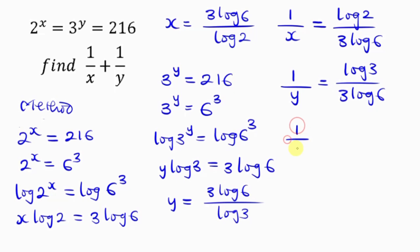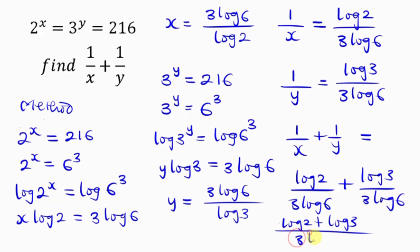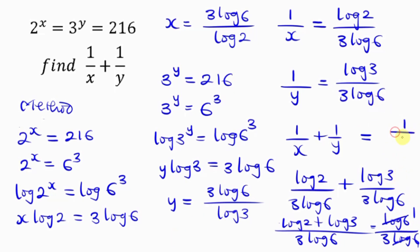Now let's add them. 1 over x plus 1 over y equals log 2 over 3 log 6 plus log 3 over 3 log 6. Since the denominators are the same, we add the numerators: log 2 plus log 3, divided by 3 log 6. Remember, log 2 plus log 3 equals log 6, so log 6 divided by 3 log 6 gives us log 6 cancelling log 6, and the final answer is 1 over 3. And there you have it.